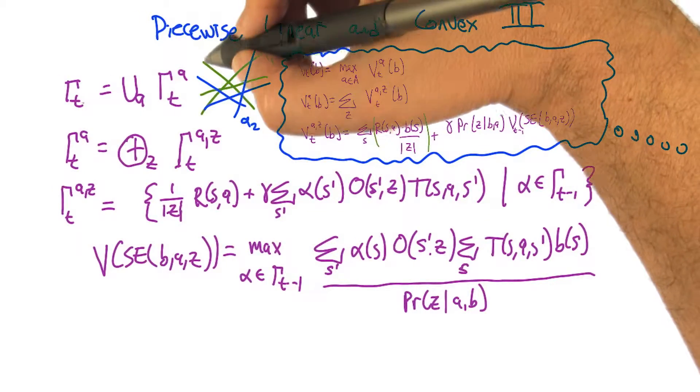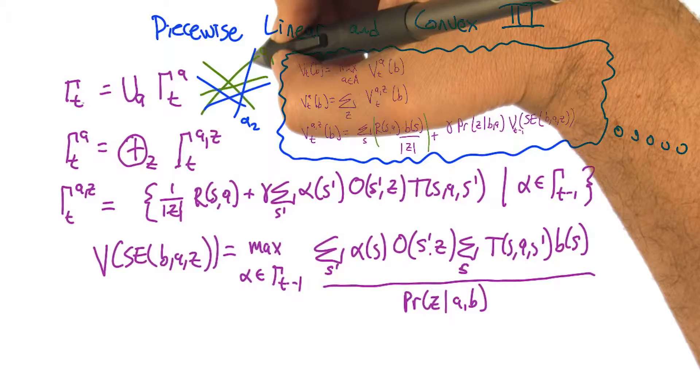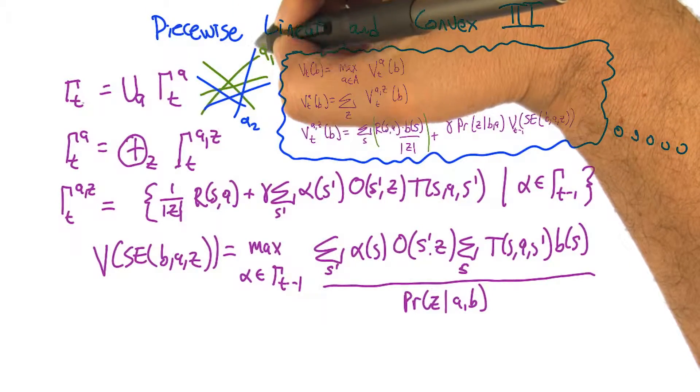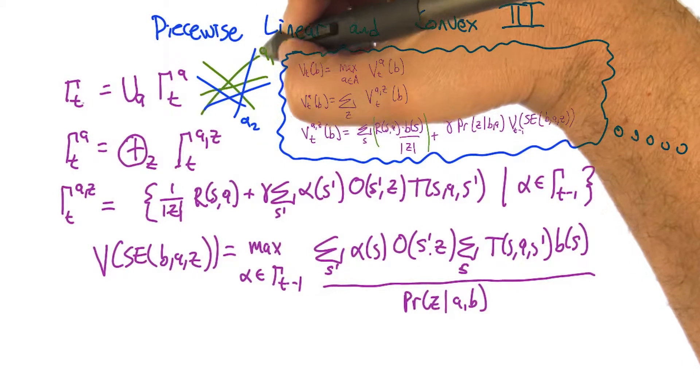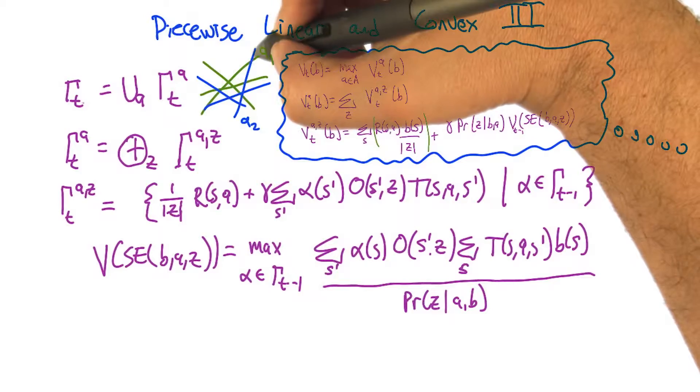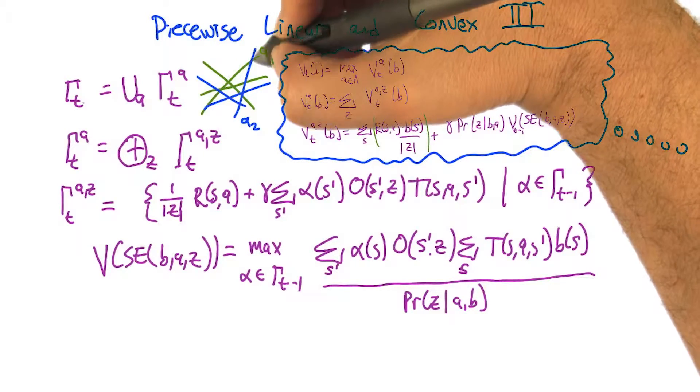So the thing to note is that the max is the max over the bag of vectors, this upper surface here is actually the right thing. That if a1 gives the highest answer in one case, then we get that. If a2 gives a higher answer in another case, we get that.